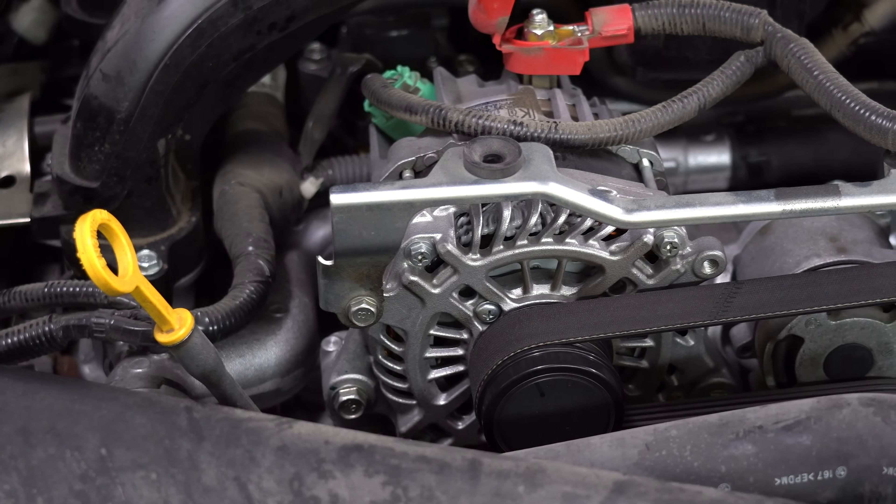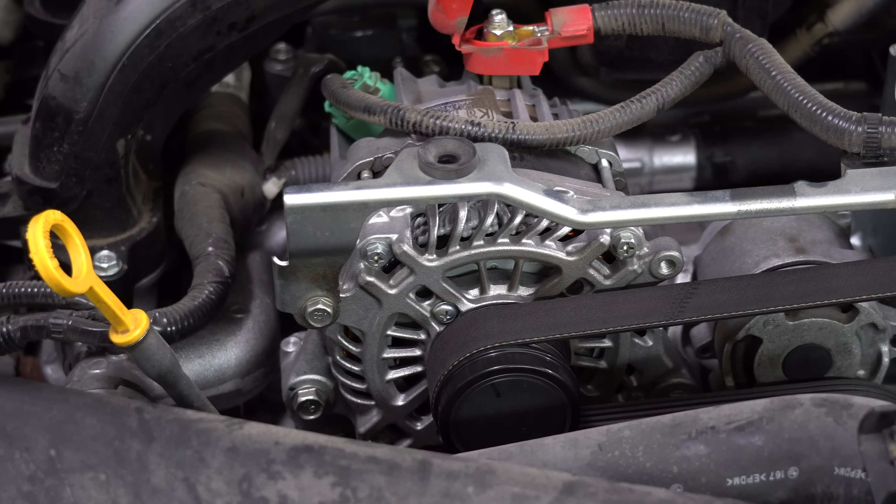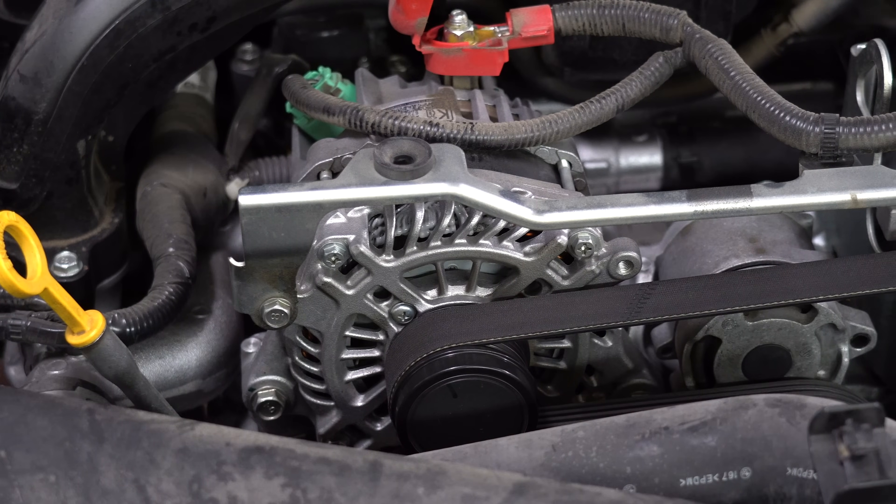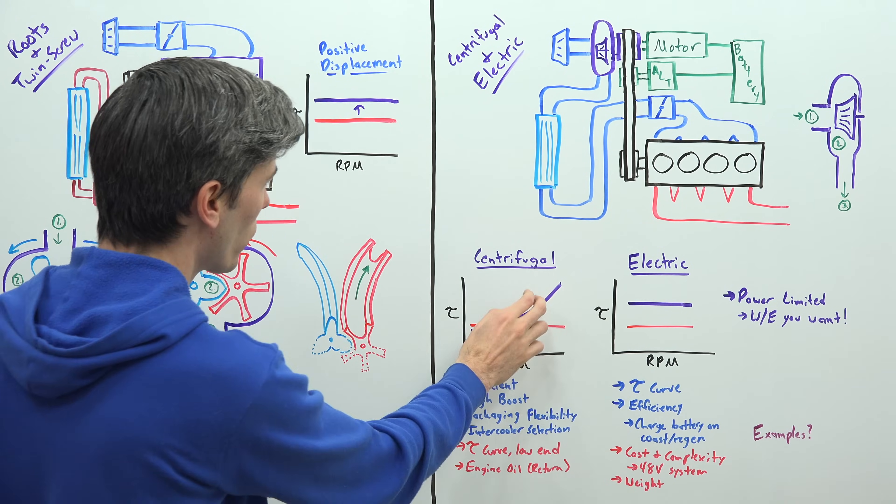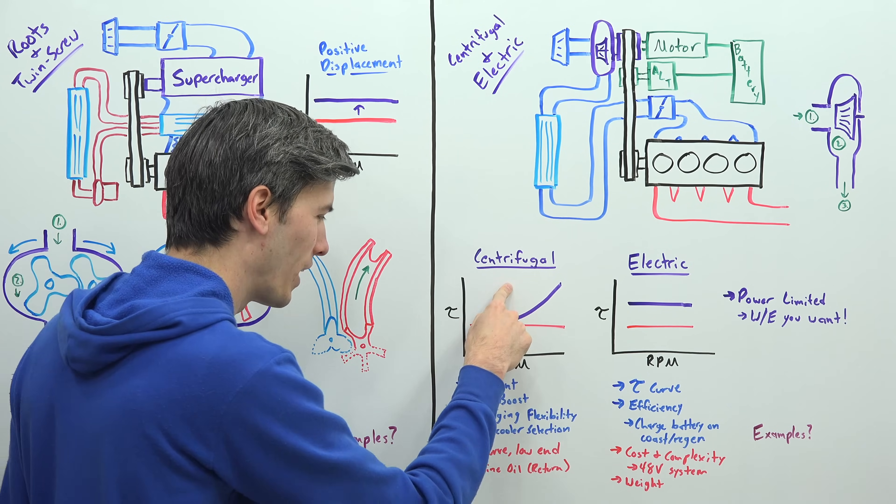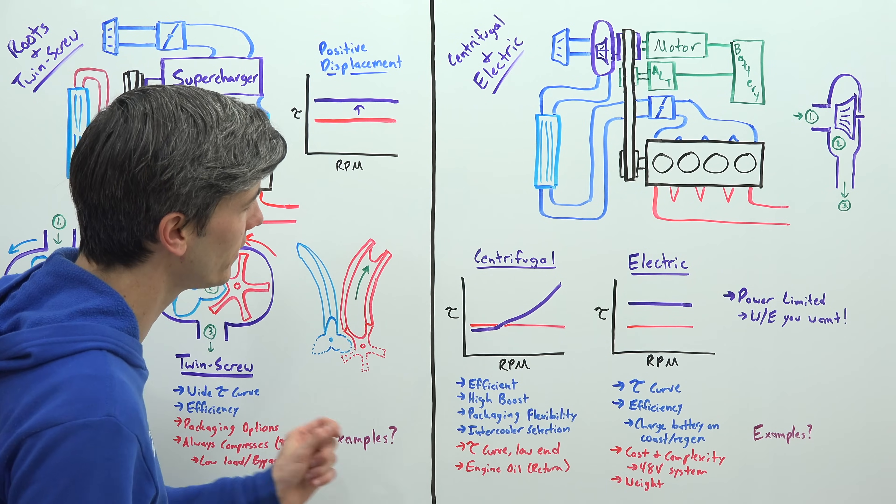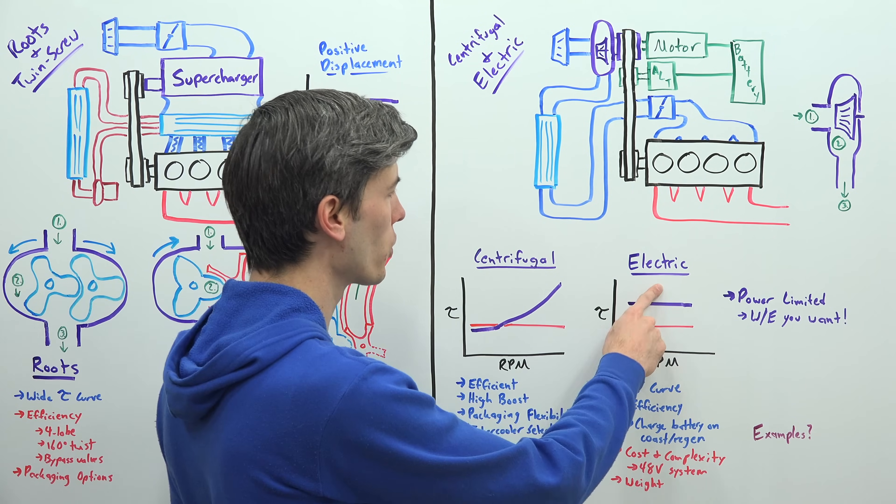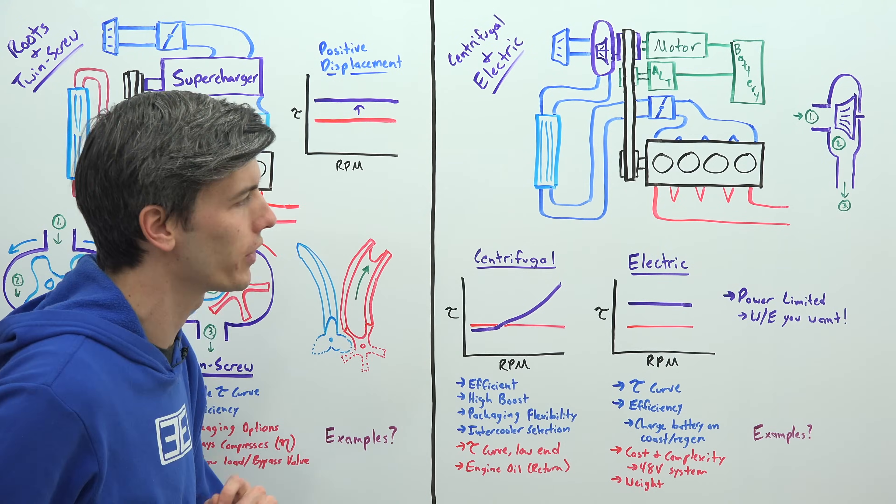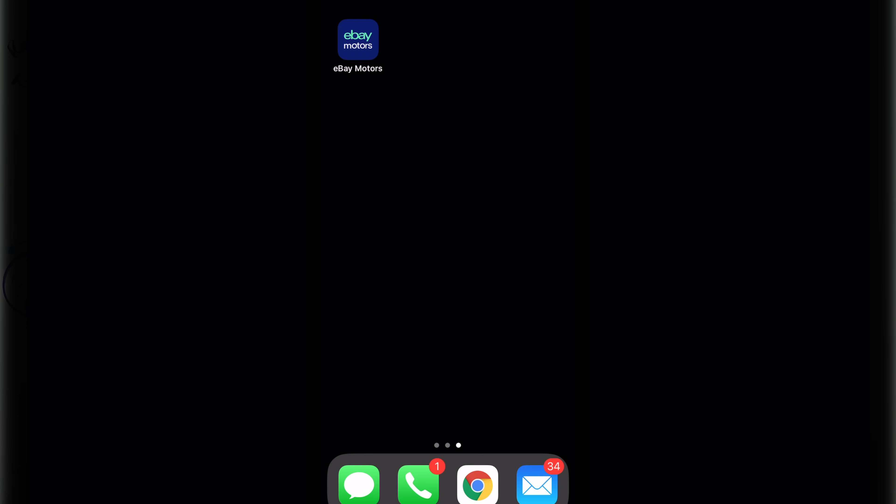Now some examples of cars that use these - you can find centrifugal superchargers, actually there's two of them that go on the Koenigsegg CCX. An electric supercharger being used on the Audi SQ7. And again a huge thank you to eBay Motors for sponsoring the video.